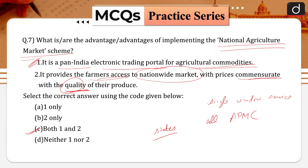Whatever the quality, the prices will be commensurate with regard to it. Therefore, statement two is also correct. The correct answer becomes option C, that is both one and two.